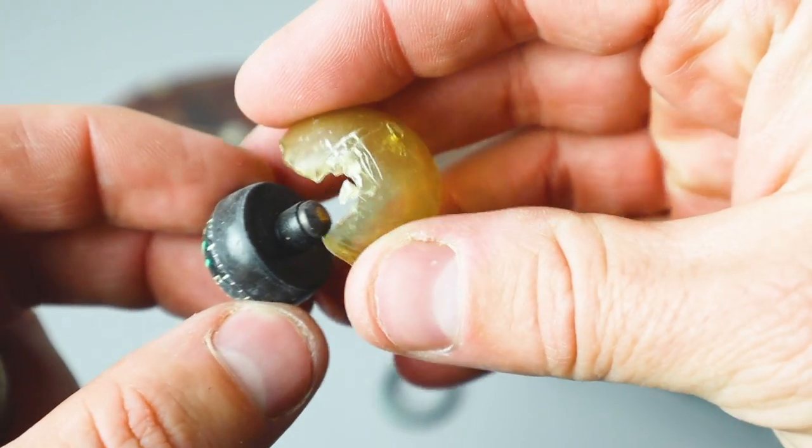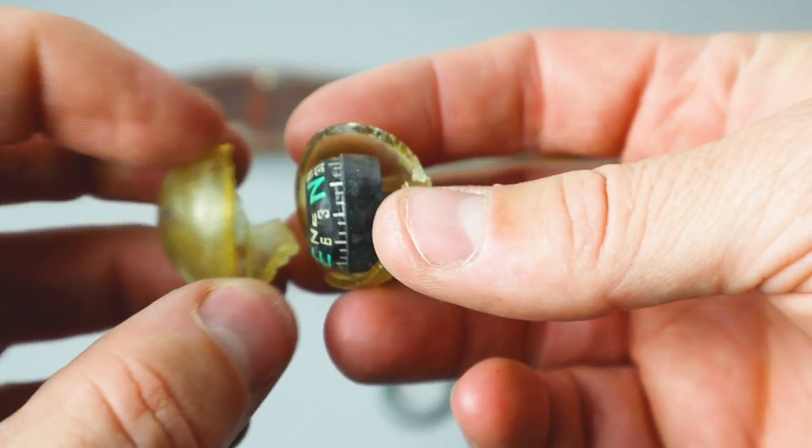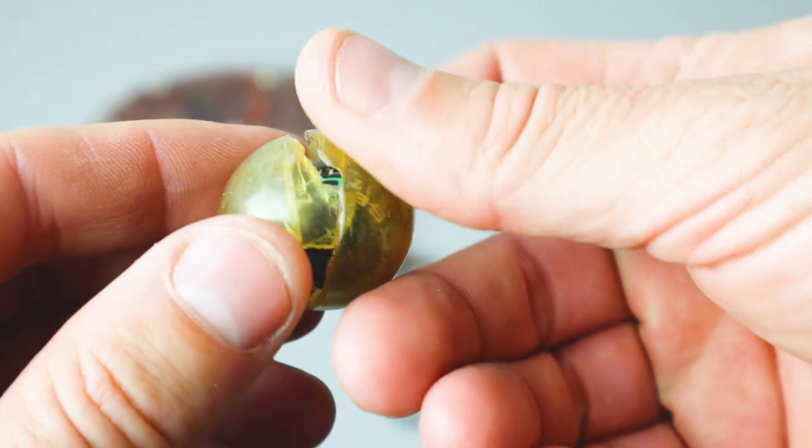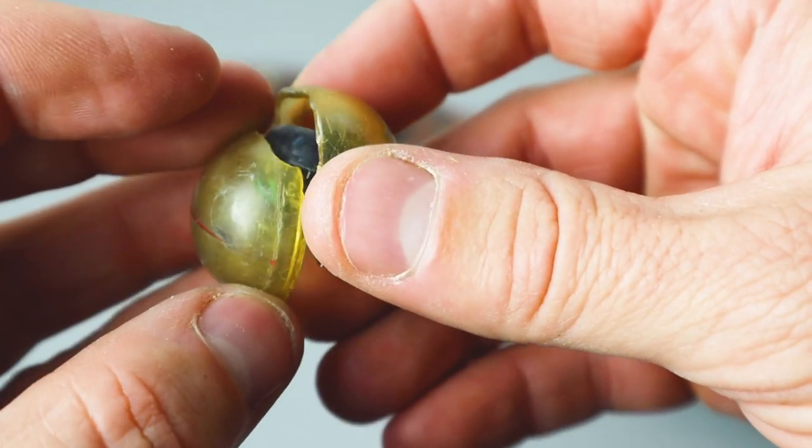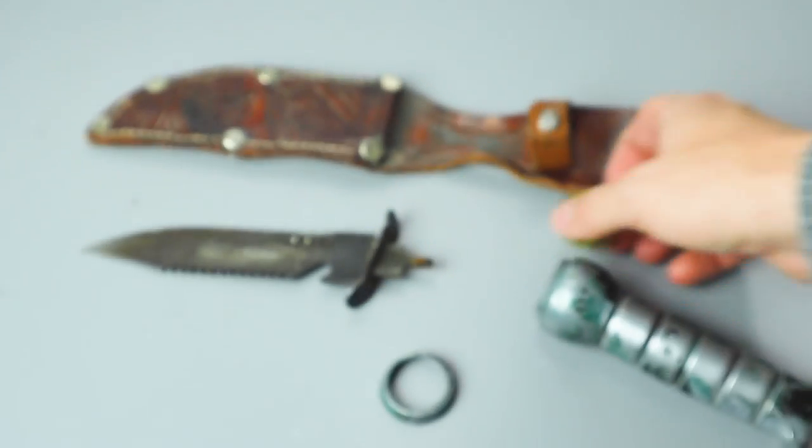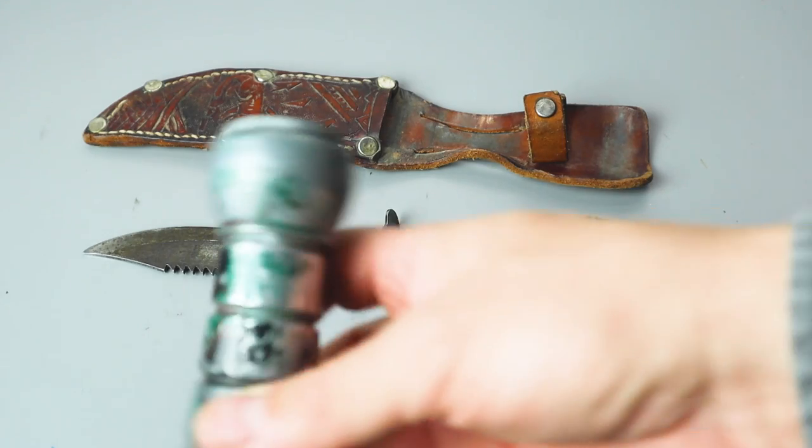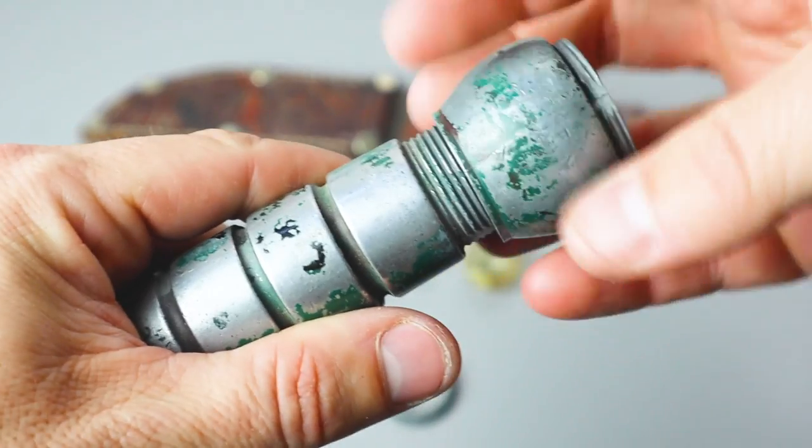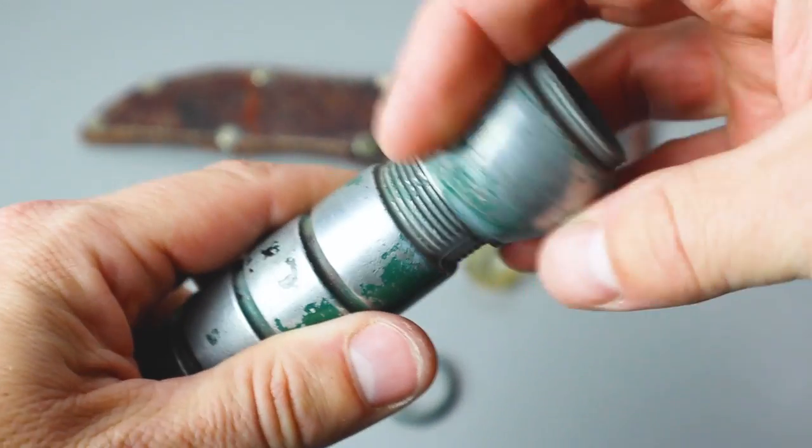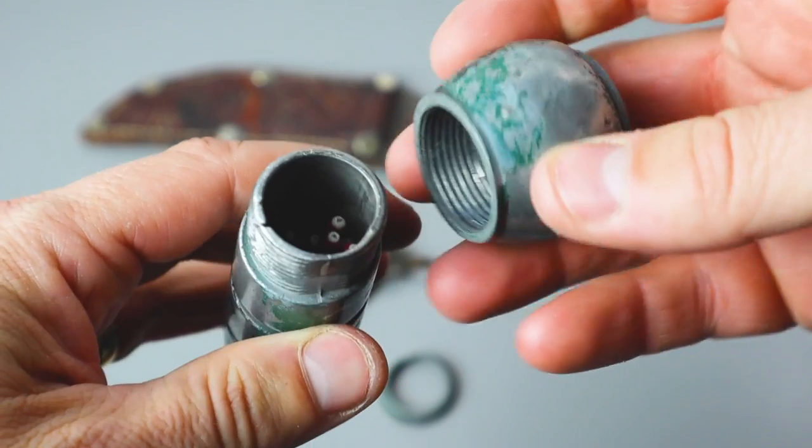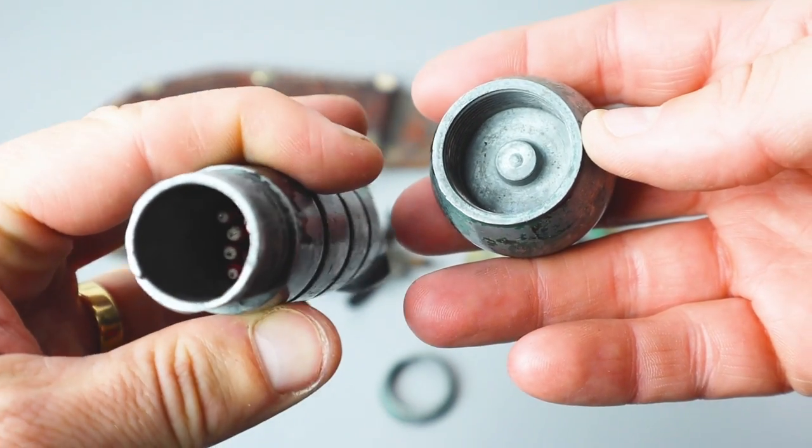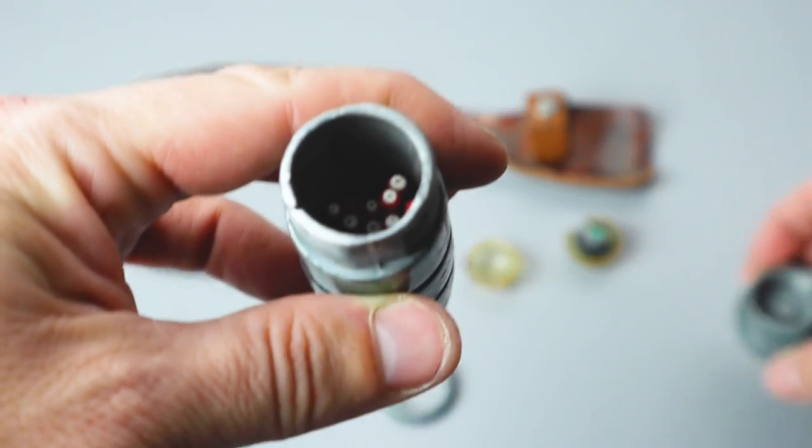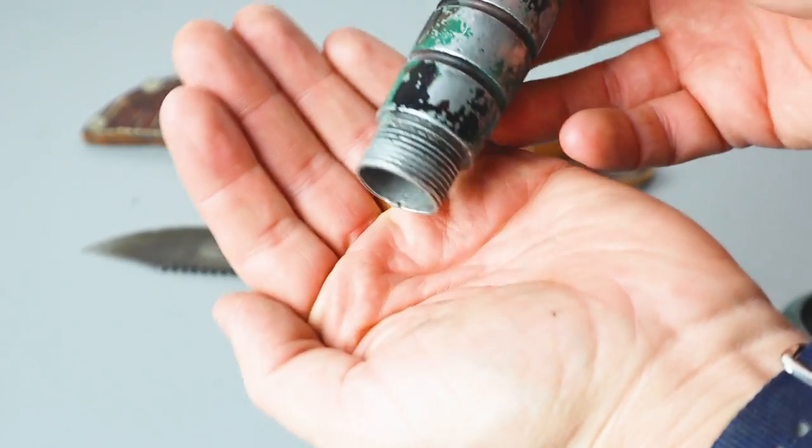The variant of Mumbly Peg that we played was the stretch version. You stand facing your opponent with your feet basically side by side together, opposite your opponent, and you take your knife and throw it to stick it in the ground, preferably flipping at least once or more. If it sticks, your opponent then has to stretch until they touch the knife.